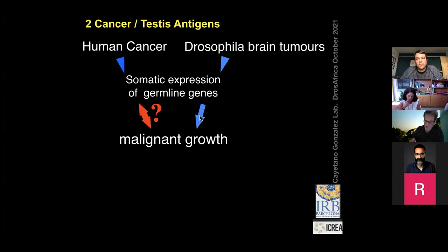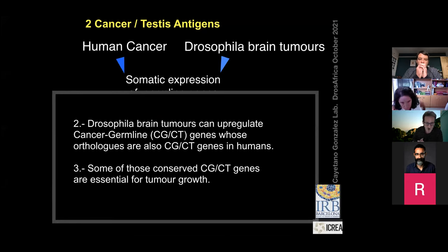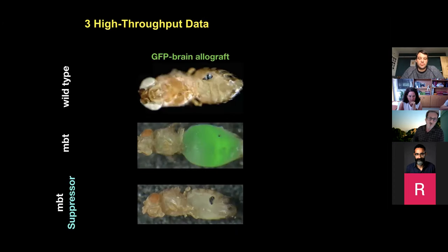We know of about 30 or 40 genes that behave likewise. To summarize: Drosophila brain tumors can upregulate cancer germline / cancer testes genes, whose orthologs are also known as cancer germline or cancer testes genes in human oncology. We have been able to show that some of those are conserved and have paralogs, and among those, a fraction are absolutely required for tumor growth.